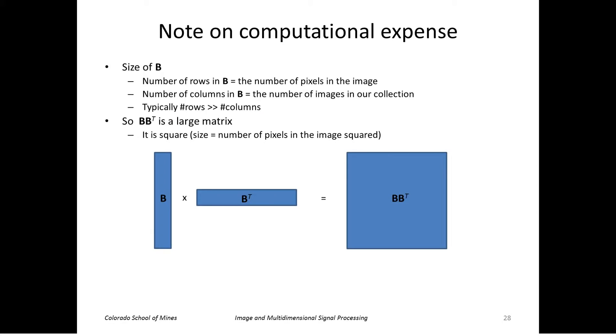So that means that B B transpose is a large matrix. So this kind of schematically shows the size of B and the size of B transpose. That matrix product gives us a square matrix of this size. So what we want to do is compute the eigenvectors and eigenvalues of this matrix, which corresponds to the covariance matrix, but this is expensive for a large matrix.